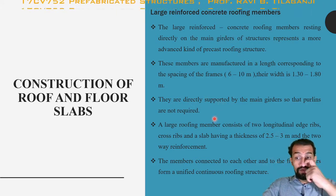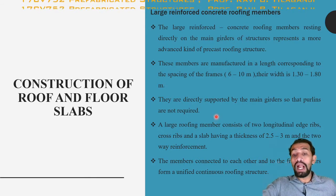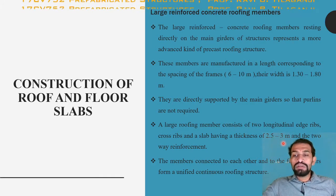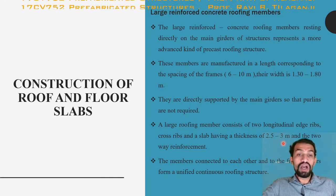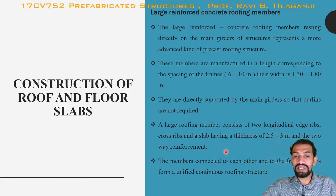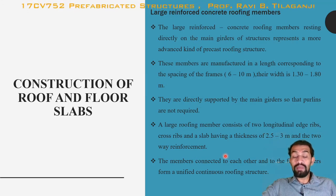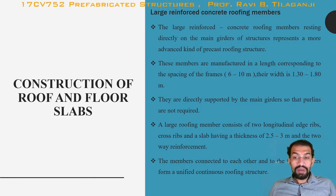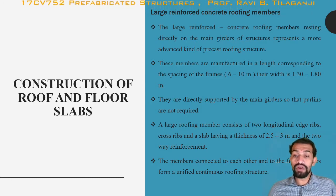The large roofing member consists of two longitudinal edge ribs, cross ribs, and a slab with a thickness of about 2.5 to 3 meters. Two-way reinforcement is provided for this type of roofing member. Members are connected to each other and to the frame girders to form a unified, continuous roofing structure.